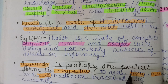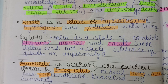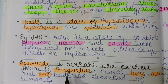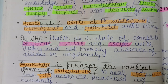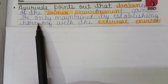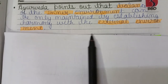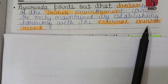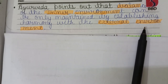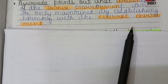Ayurveda is perhaps the earliest form of integrative medicine practiced by humanity. Integrative means to heal body, mind, and self. Ayurveda points out that the balance of the inner environment can only be maintained by establishing harmony with the external environment.